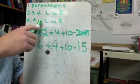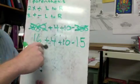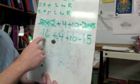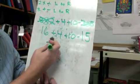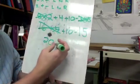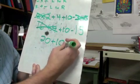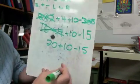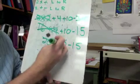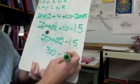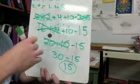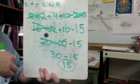Now we've got all multiply and divide taken care of, so we move to the last step: add and subtract from left to right. Sixteen plus four is twenty — bring everything else down. Twenty plus ten is thirty — bring everything else down. Thirty minus fifteen is fifteen. So the answer to the original problem is fifteen.